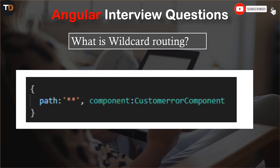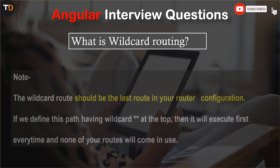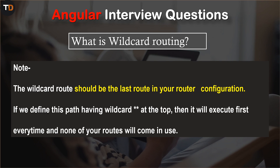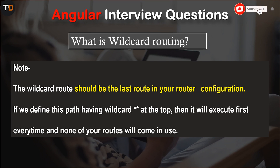Here is an example of wildcard routing — we set the path to double asterisk and render the custom error component. An important note: the wildcard route should be the last route in your router configuration. If you define the wildcard path at the top, it will execute first every time and none of your other routes will be used.